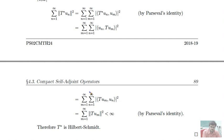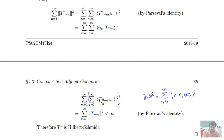Now we apply Parseval's identity again. The inner sum, summation n equals 1 to infinity of mod of the inner product of T(uₘ) with uₙ squared, equals the norm of T(uₘ) squared. So after interchanging summation, our expression reduces to summation m equals 1 to infinity of norm of T(uₘ) squared. Since T is Hilbert-Schmidt, this series is convergent, and therefore T* is also Hilbert-Schmidt.